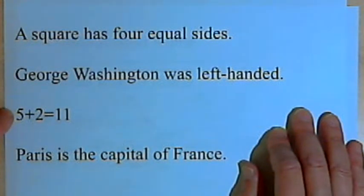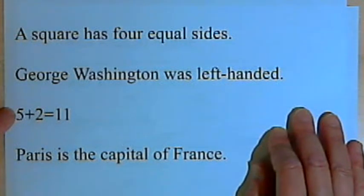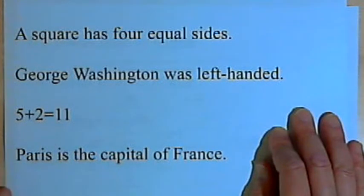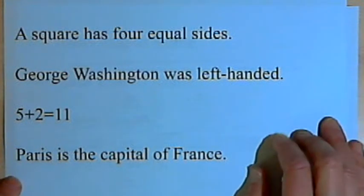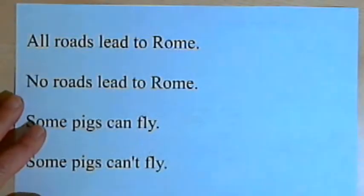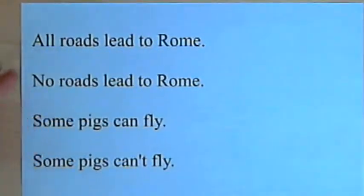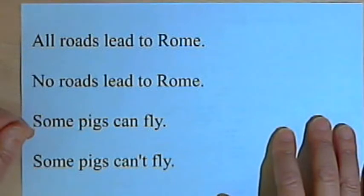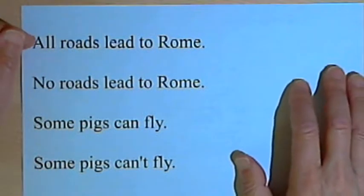5 plus 12 equals 11. We negate that with 5 plus 12 does not equal 11. Same thing with Paris as the capital of France. The problem we have is when the statements contain words like all or no or some or each or every, in which case we can't negate them as simply.